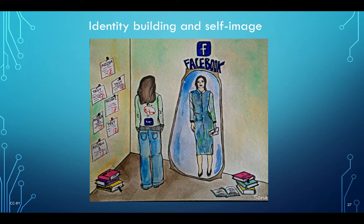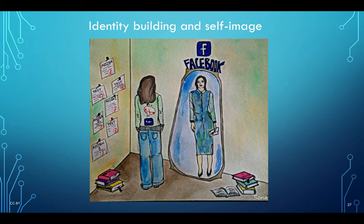Here we have a drawing about identity building and self-image. Unfortunately, this woman is looking into the mirror, and the mirror is Facebook. On the wall, you can see that she has taken tests but has only Fs — she's trying to be someone that exists only on Facebook, and her reflection is what she does and sees on Facebook. We need to be very careful because academic research says that youth who go on Facebook have a distorted image of themselves and their peers, striving to be perfect like their peers when in reality their peers are not perfect.